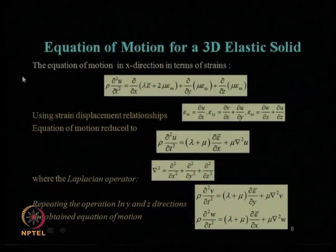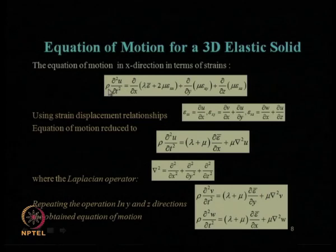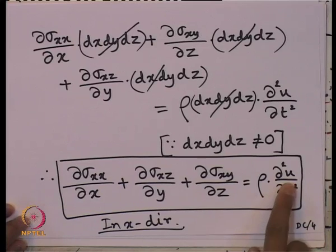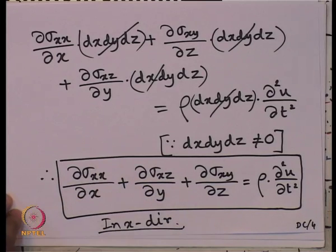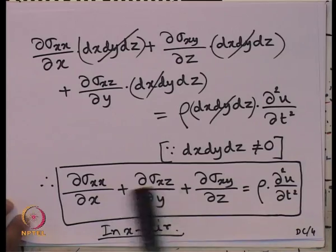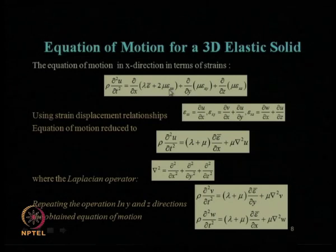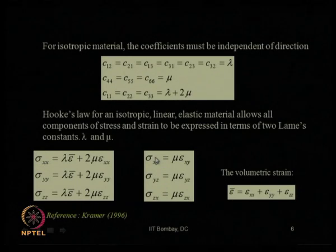Let us now solve the equation of motion for a three-dimensional elastic solid. The basic governing equation of motion has already been derived. Taking only the x-directional equation: rho * del² u / del t² equals the stress terms. We now express all normal and shear stresses in terms of strain through Lamé's constants. Sigma_xx becomes lambda * epsilon_bar + 2*mu*epsilon_xx. For sigma_yz and sigma_zx, we use their corresponding relationships, which are substituted into the equation.